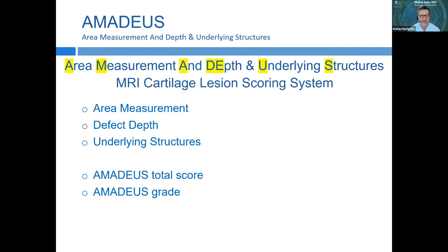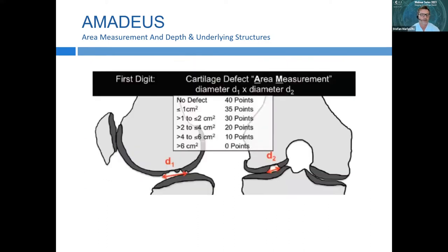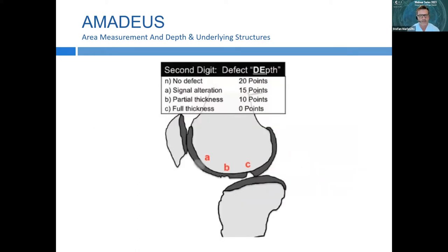Let's look at this score in detail. First we measure the area, determining diameters in two directions to measure size and area of the defect — giving us the first digit of the score. Second, we look at depth: with no defect we get the highest scoring of 20 points, while partial and full-thickness defects receive fewer points, with full-thickness scoring zero.